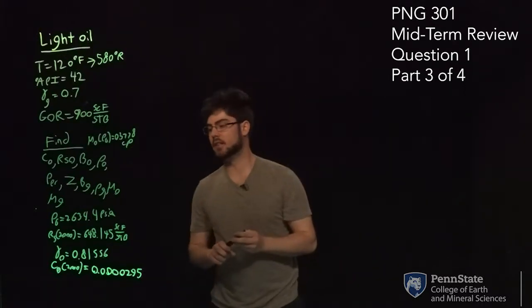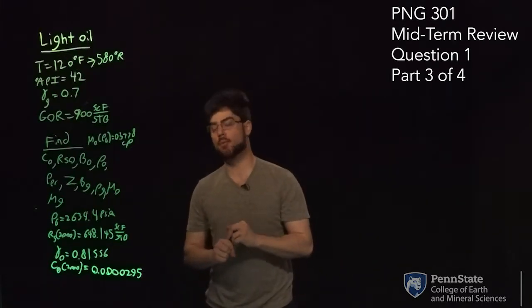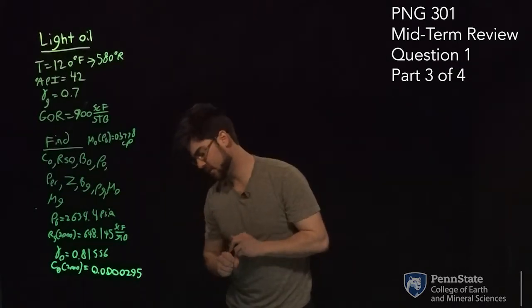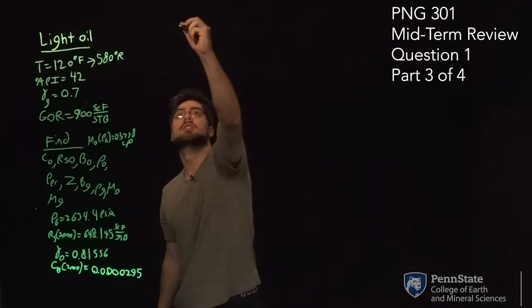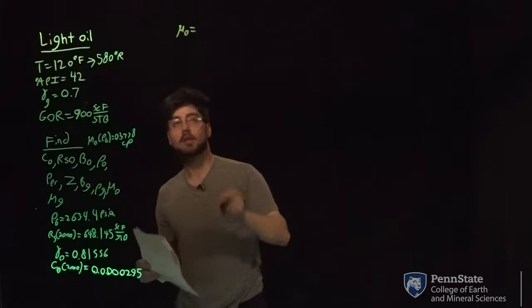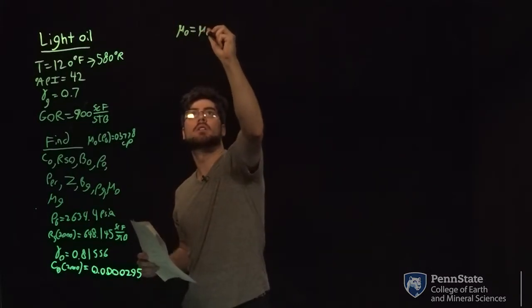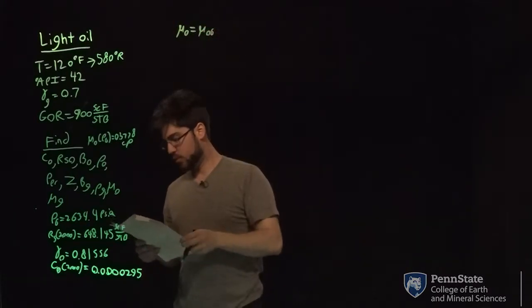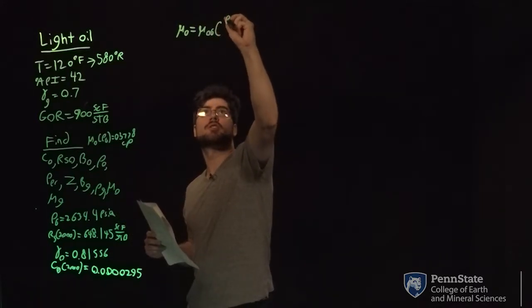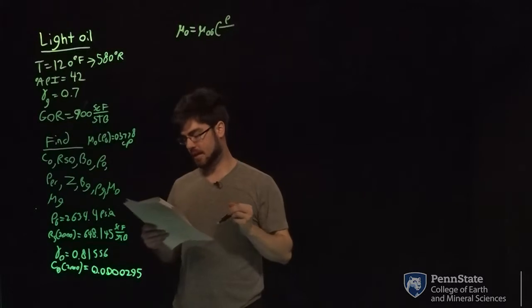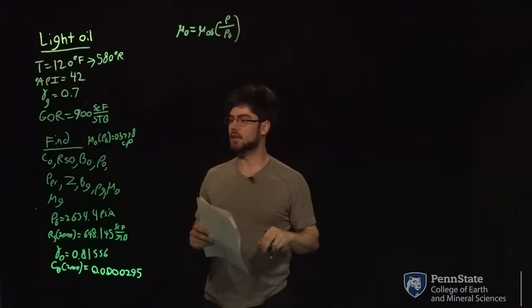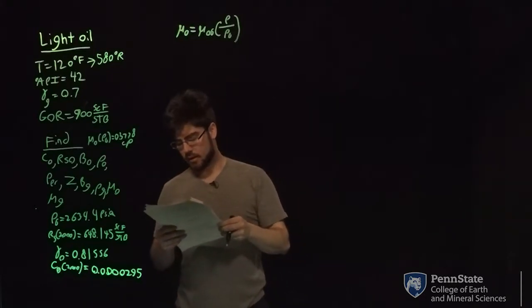To define oil viscosity at pressures above the bubble point, we're going to use equations 3.56 and 3.57. The viscosity of oil equals the viscosity of oil at bubble point, times the pressure of interest — which for our case is 4,000 psi — divided by our bubble point pressure, which is 2,634, to the c power.